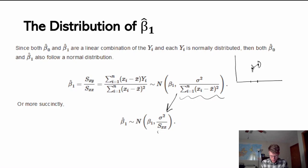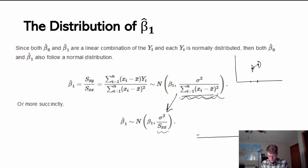We can also simplify the variance term using the symbol S sub xx instead of writing out the full denominator — which is handy when writing. To talk through the logic: beta hat one is centered at the true beta one value, so there is a normal distribution of possible beta hat ones centered at the true beta one.